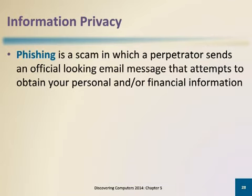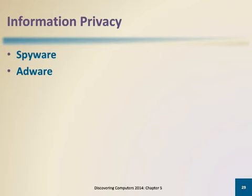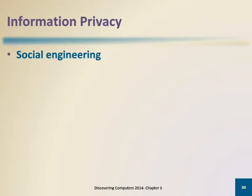Phishing involves an official-looking email message that attempts to obtain your personal and financial information. Clickjacking occurs when an object that can be clicked on in a website contains a malicious program. Spyware is a program placed on a computer or mobile device without the user's knowledge that secretly collects information about the user and communicates it to some outside source while the user is online. Adware is a program that displays an online advertisement in a banner or pop-up window on web pages, email messages, or other internet services. Social engineering is defined as gaining unauthorized access to or obtaining confidential information by taking advantage of the trusting human nature of some victims and the naivety of others.